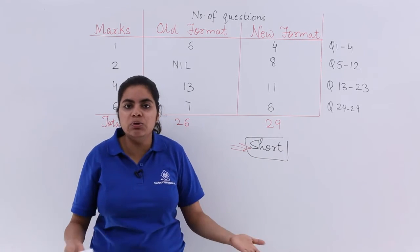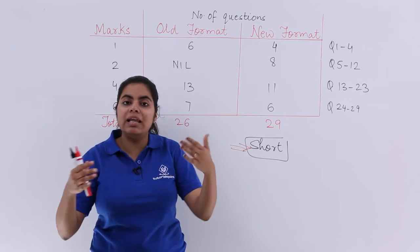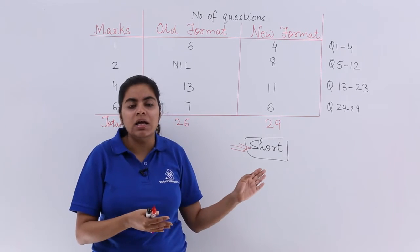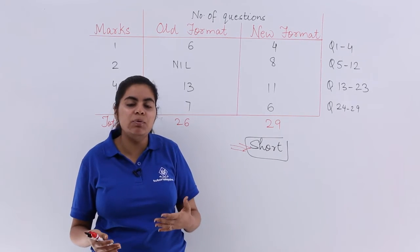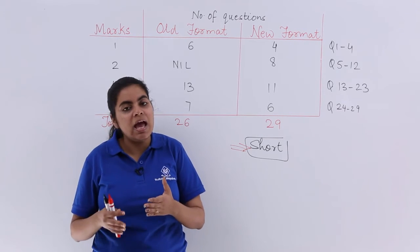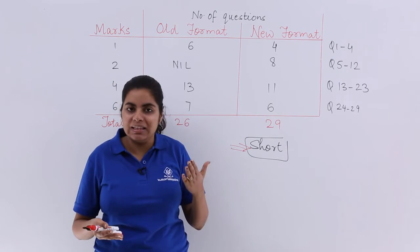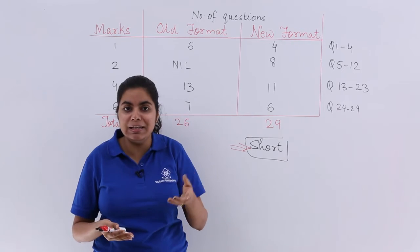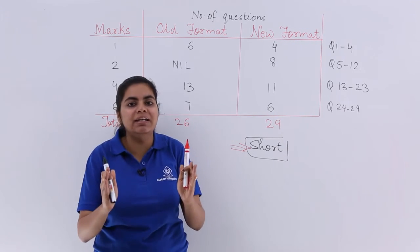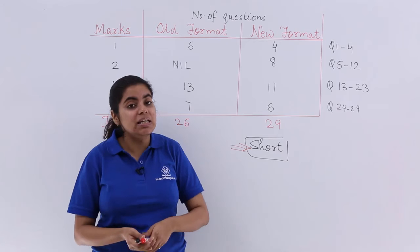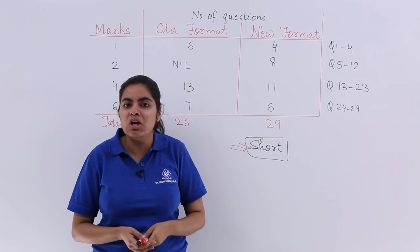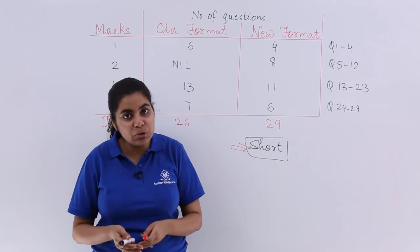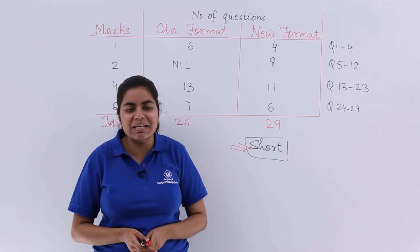Suppose the question is for four marks, definitely you will follow all the steps. But if a lengthy question has come in two marks, there is no need to follow all those steps. You can skip some steps and you can show some important steps. That is how judicially and wisely you do your question paper in the limited time frame. Otherwise even this new exam pattern will not be beneficial and you will even leave your paper in this exam pattern.